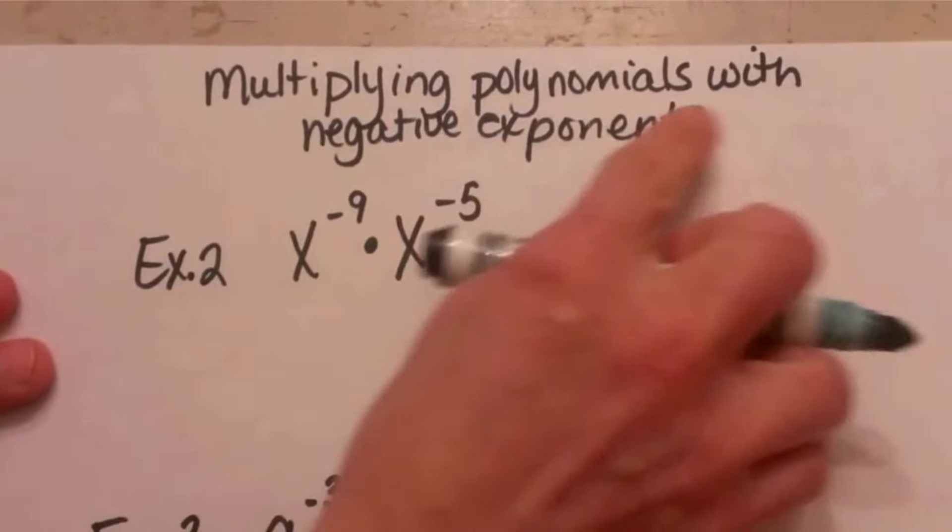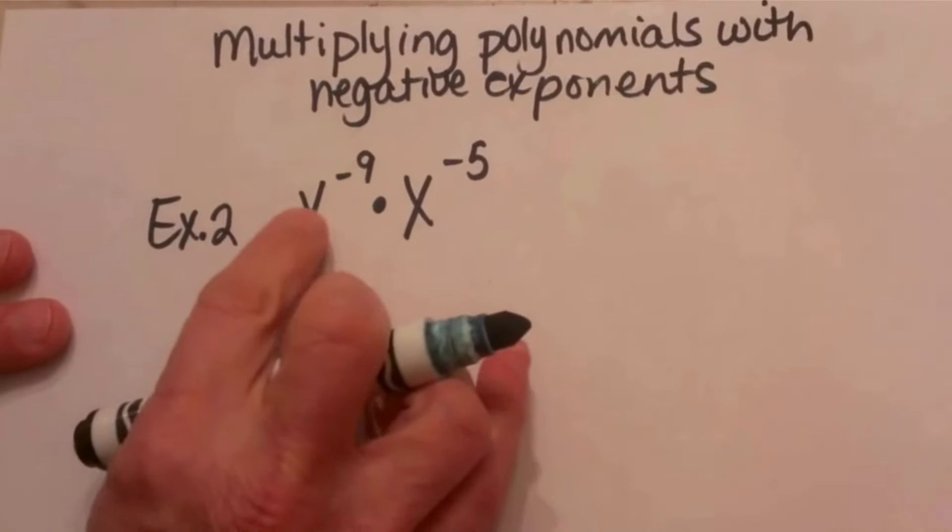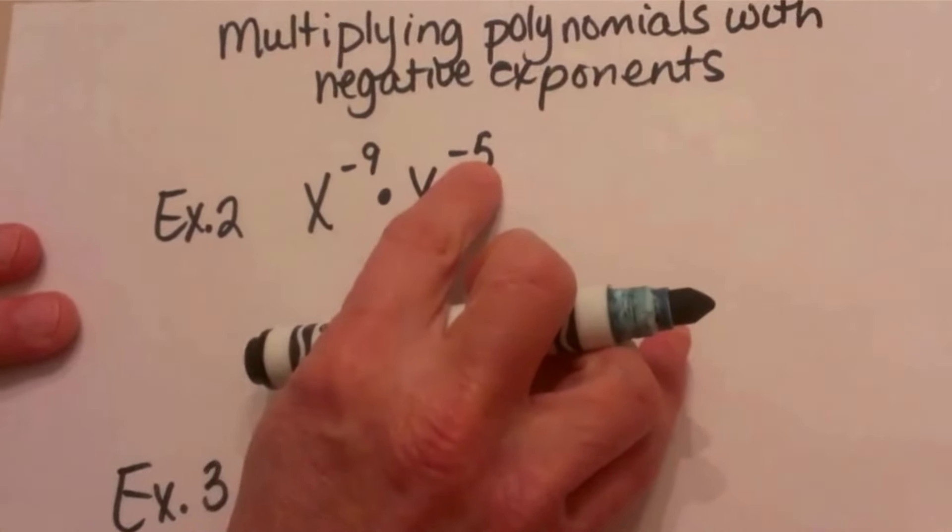I'll look at multiplying polynomials with negative exponents. Here's our first example: x to the negative 9th times x to the negative 5th.